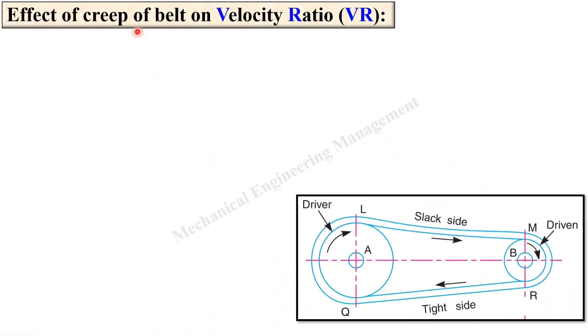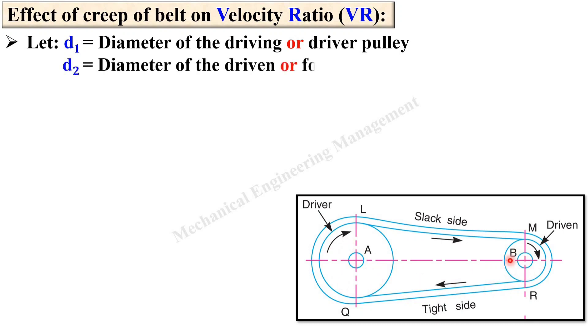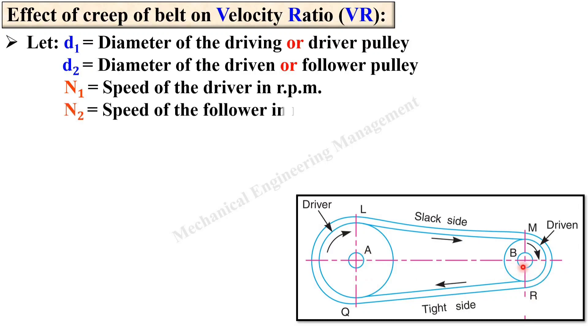Now see the effect of creep of belt on velocity ratio. Let us say d1 is the diameter of the driving or driver pulley. Next, d2 is the diameter of the driven or follower pulley. Next, N1 is the speed of the driver in rpm and N2 is the speed of the follower in rpm.